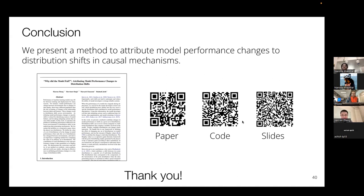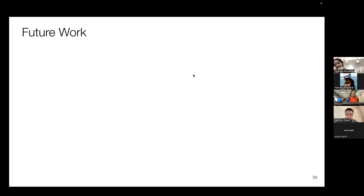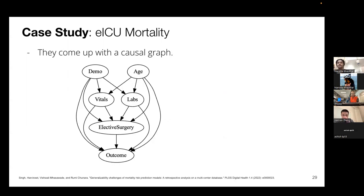Thank you very much for listening. Thank you for this very interesting talk — your work aligns closely with the goal of explainability of AI models, and being able to explain performance drops is a huge benefit for deployment. Can we go back to how you're generating causal graphs? Is it always based on domain knowledge, and what happens if the graph is misspecified?